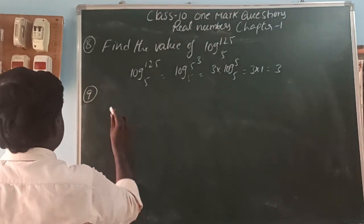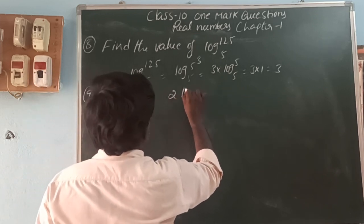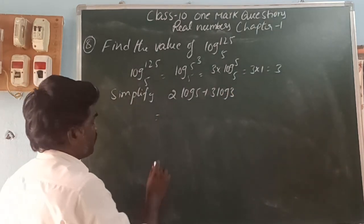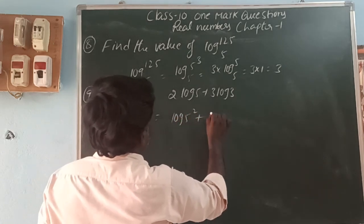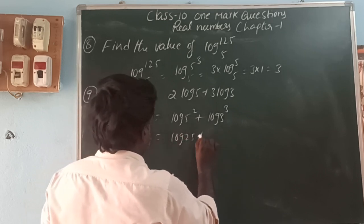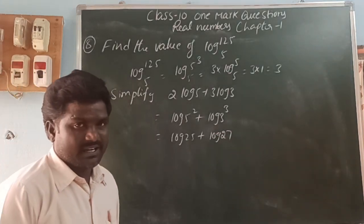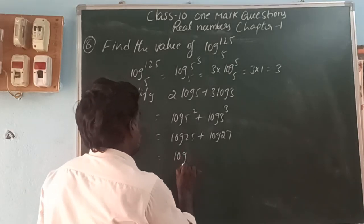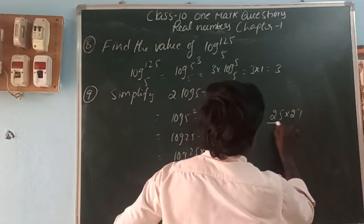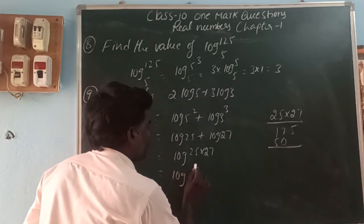Simplify 2log5 + 3log3. We write 2log5 as log(5²) = log 25, and 3log3 as log(3³) = log 27. Using the law log x base a + log y base a = log(x·y) base a, this becomes log(25 × 27) = log(675).